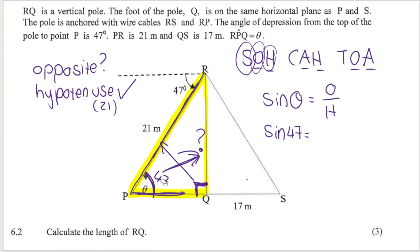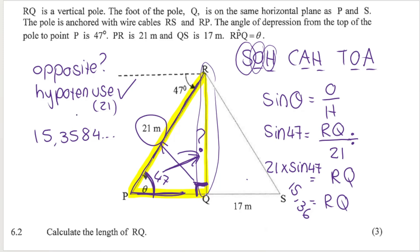What is opposite that angle? RQ, it's my unknown. RQ is my opposite. My hypotenuse is 21, it's PR or RP. To solve for RQ you want to do the opposite of divide by 21, which is multiply by 21. So 21 multiplied by sin 47, that's going to get me RQ. So RQ is therefore 15.36. My calculator gives me 15.3584. If you round that off to two decimal places it's going to be 15.36 meters. This is in meters so your answer here is going to be in meters.